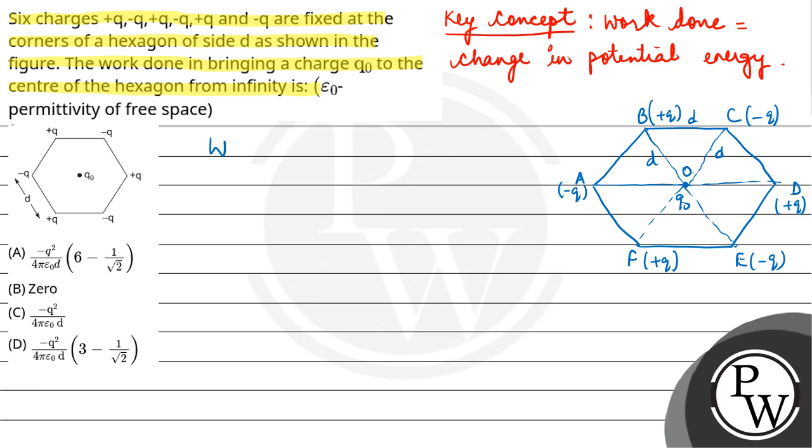For work done, we calculate delta U, that is U_initial minus U_final. Initially at infinity the potential energy is zero, so this equals minus Q₀ times the potential at O. The potential at O equals potential due to charge at A plus potential at O due to charge at B plus potential at O due to charge at C, and so on.